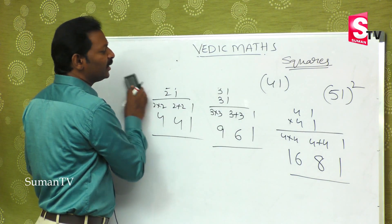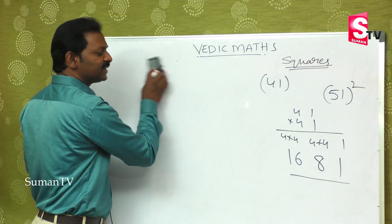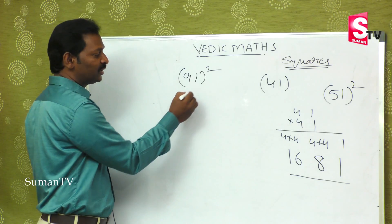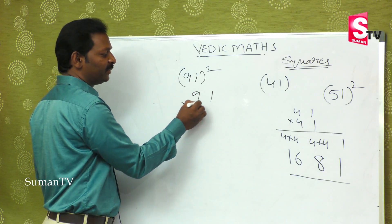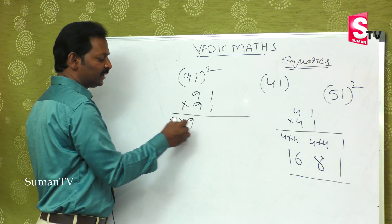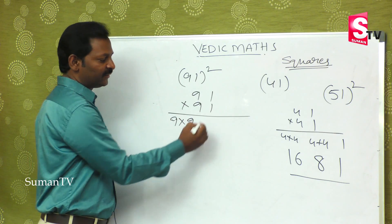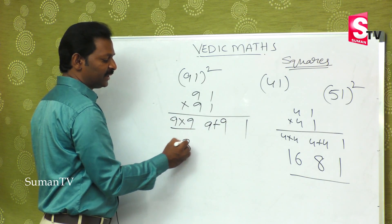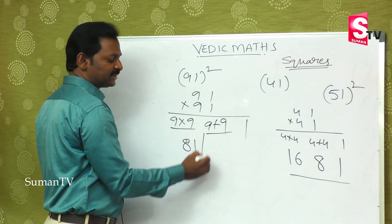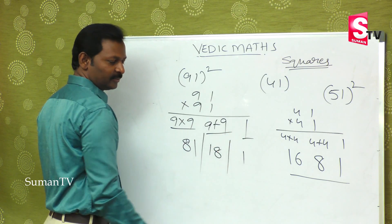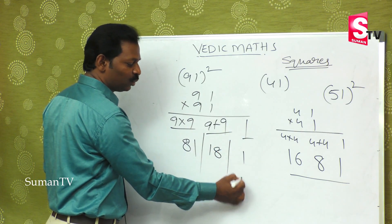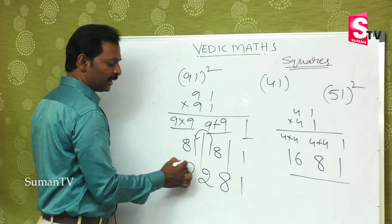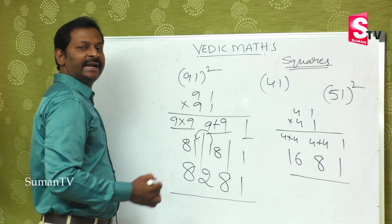For the biggest example, 91 into 91: first 9 into 9 is 81, then 9 plus 9 is 18, then 1. Applying the balancing rule: 1 from 81 carries over and adds to 18 giving 82, so the answer is 8281.